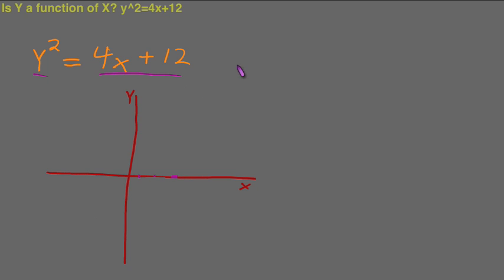So to do this, we're going to have to isolate Y. It's pretty easy to see that if we take the square root of both sides, we'll get Y on its own. So let's do that. Y equals plus or minus the square root of 4x plus 12.